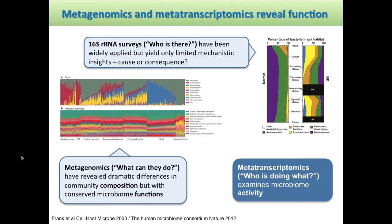This is a metagenomic survey that Morgan highlighted yesterday. At the top we have different individuals showing huge variation in their phyla across different body sites. However, when you look at the functions, they look relatively similar. The suggestion is that different taxonomic groups in your microbiome can actually result in the same function. So maybe we don't care so much about what organisms are there — maybe we're more interested in what they're doing. This is what metatranscriptomics is attempting to do: identify who is doing what within your microbiome.